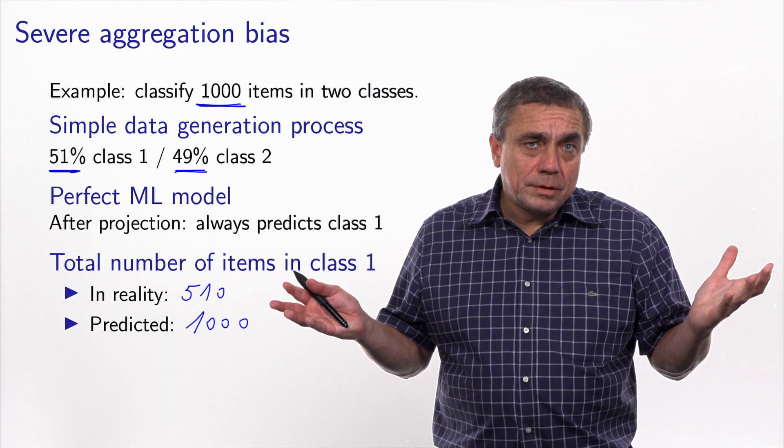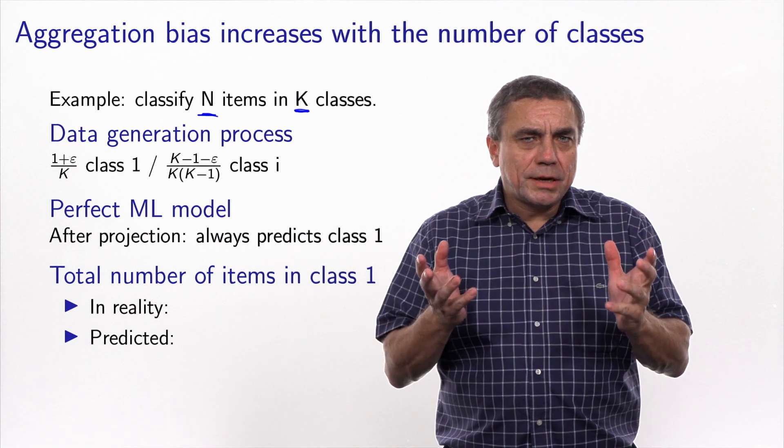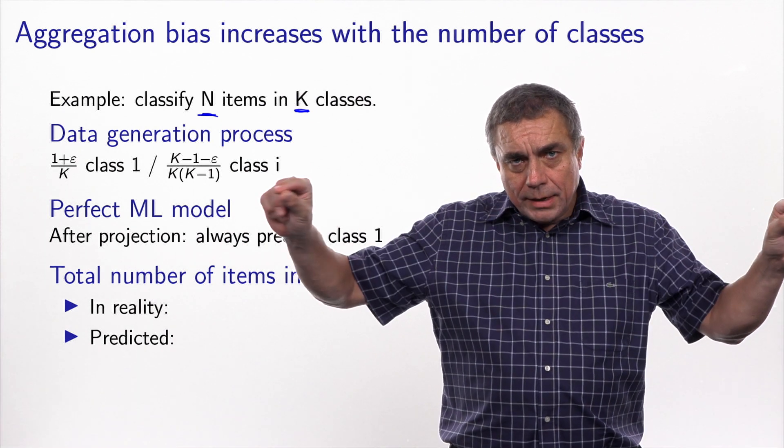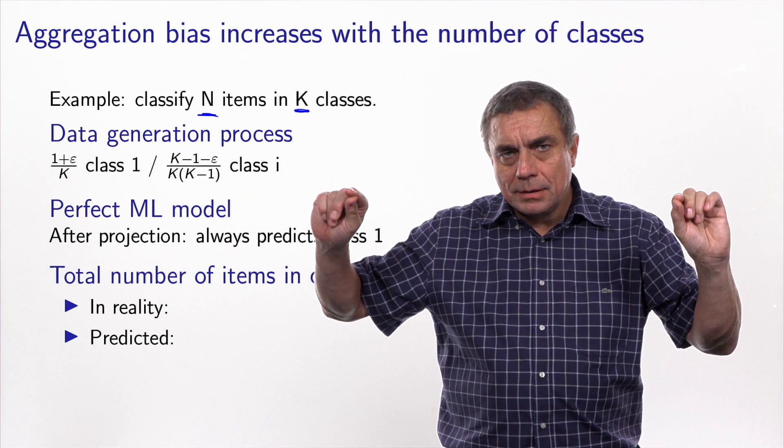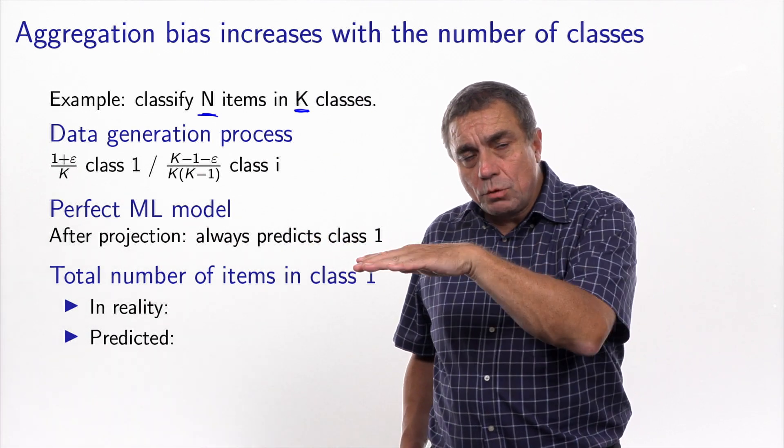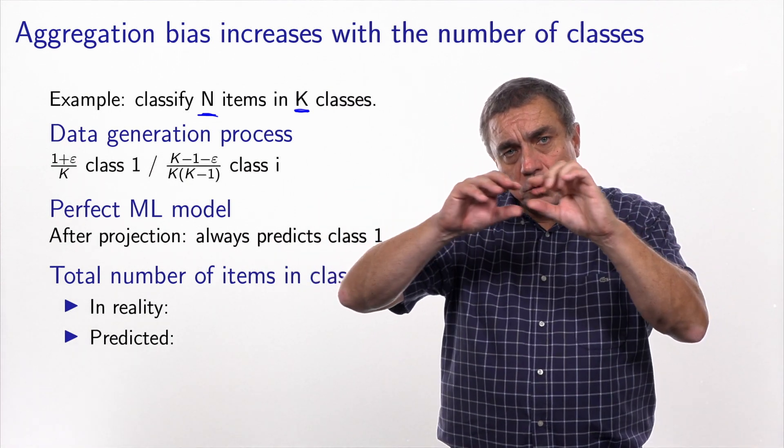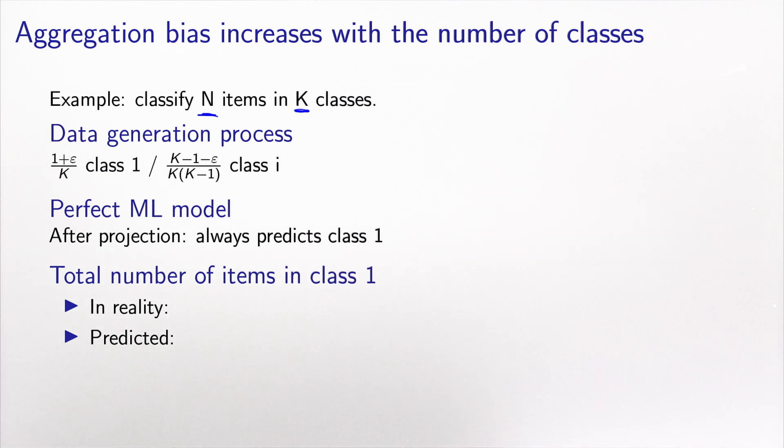In the context of aggregation, this may lead to very severe biases. And actually, the amplitude of this bias increases with the number of classes. So let's take the same example where I have to classify capital N items in capital K classes. The data generation process that I assume here is that if you have K classes, each item has almost the same probability to be in each class, except for class one, which has a little bit higher probability than the other one. So mathematically, I have the probability to be in class one equal to one plus epsilon over capital K, and I can make epsilon as small as I want. And then every other class has this probability here, which is designed to be just a little bit below equal probability.